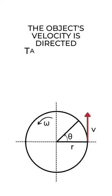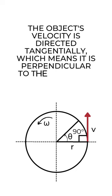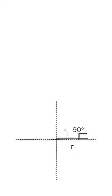At any point in time, the object's velocity is directed tangentially, which means it is perpendicular to the radius of the circle. Therefore, tangential velocity is defined as the linear velocity at any instant along the tangent of the circular path.